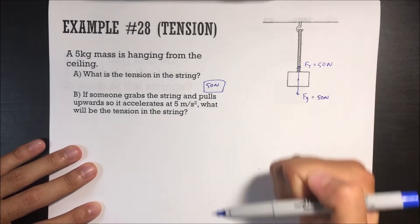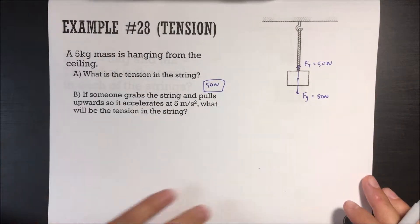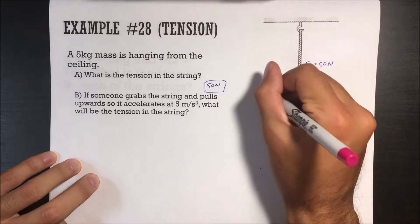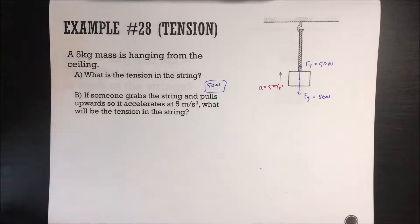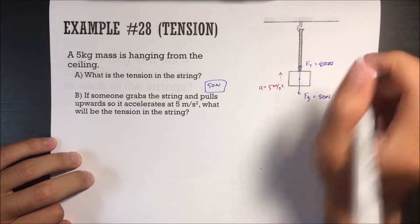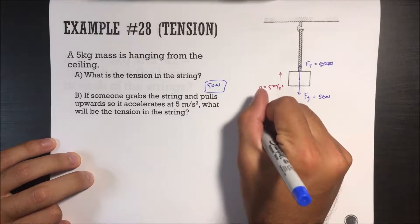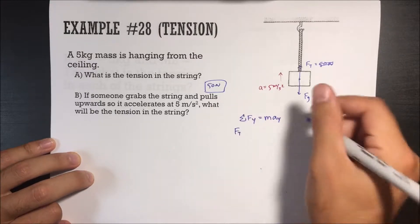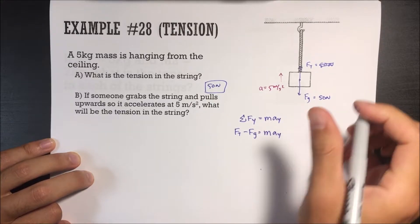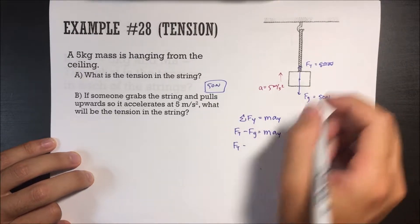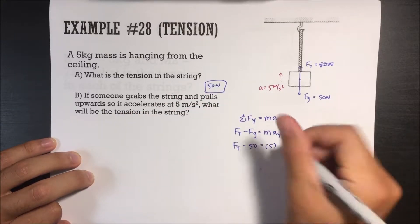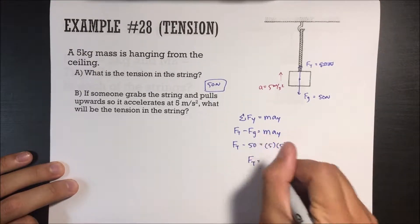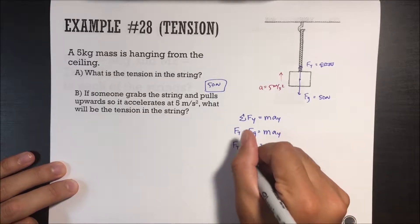Part B: if someone grabs the string and pulls it upwards so it accelerates at 5 meters per second squared, what will be the tension? This is different because now the box is accelerating at 5 meters per second squared, so the force of tension isn't going to be 50. We plug into our formula: sum of all forces in y equals mass times acceleration in y. Force of tension minus force of gravity equals mass times acceleration. Force of gravity is 50, mass is 5, acceleration is 5 m/s². Solving, the force of tension equals 75 newtons.